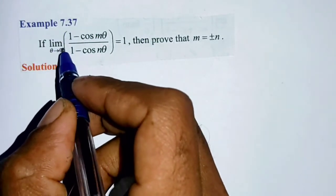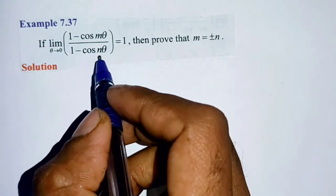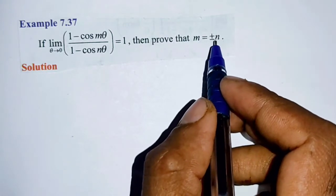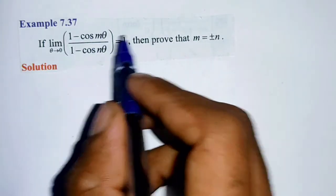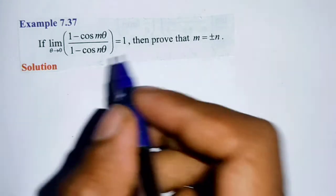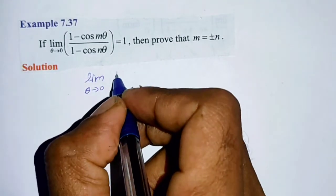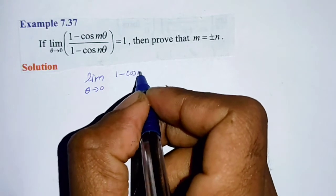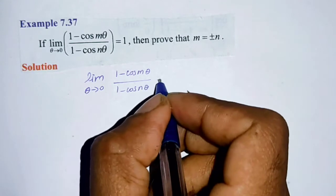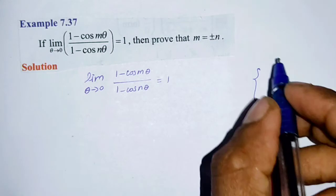Example 7.37: Given that the limit as theta tends to 0 of (1 minus cos m-theta) divided by (1 minus cos n-theta) is equal to 1, prove that m is equal to plus or minus n. First, substituting theta equals 0 directly gives 1 minus cos(0) divided by 1 minus cos(0).